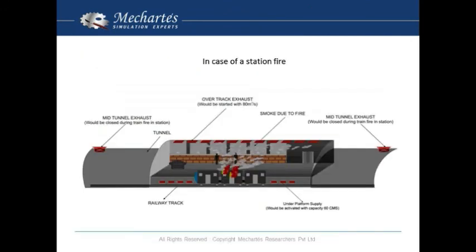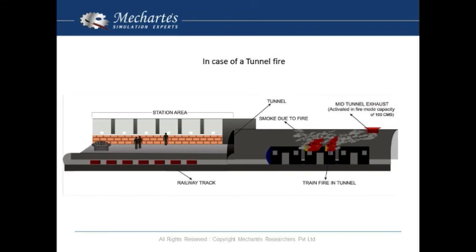This was the finalized emergency ventilation system designed using FDS and CFD simulations. In case of a station fire, this is how the system will work. The key is that under-platform exhaust will be reversed and supply will be provided, and overtrack exhaust will be installed of the required capacity. In case of a tunnel fire, mid-tunnel exhaust will provide the required ventilation.